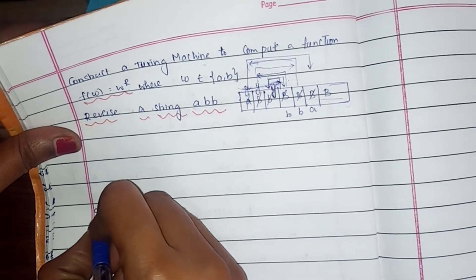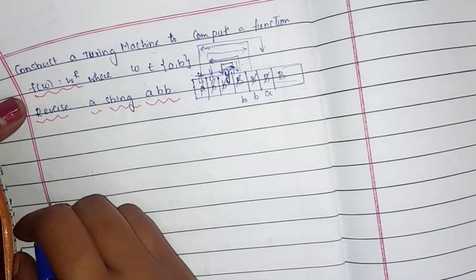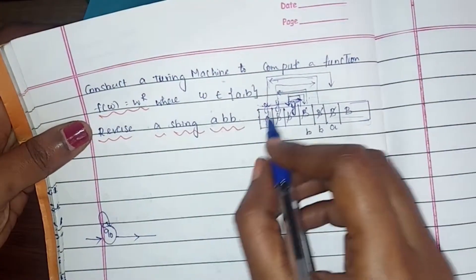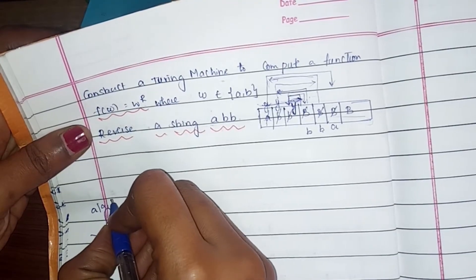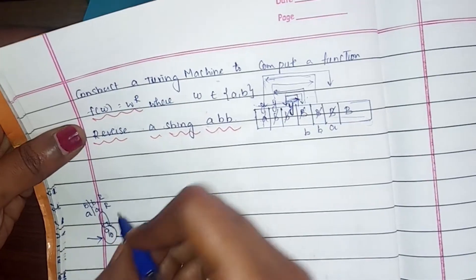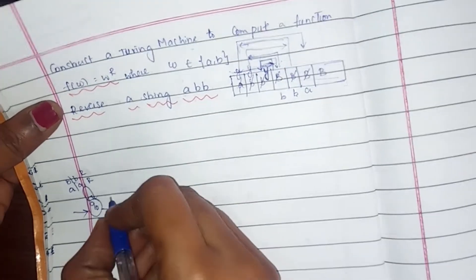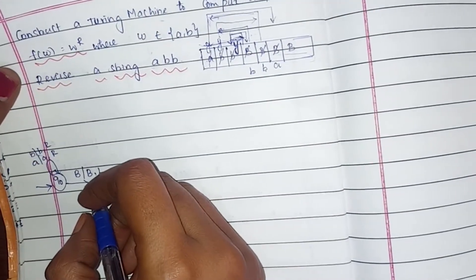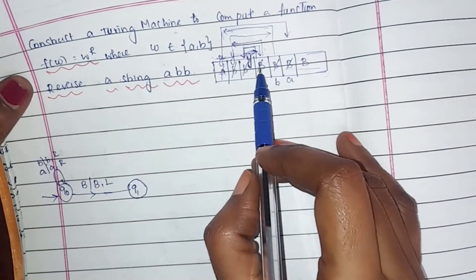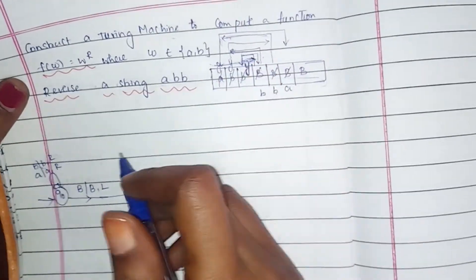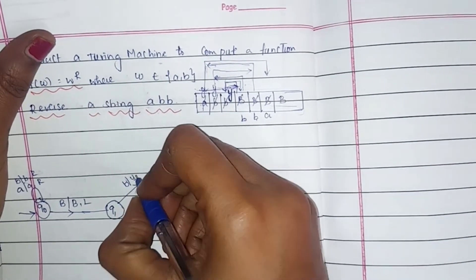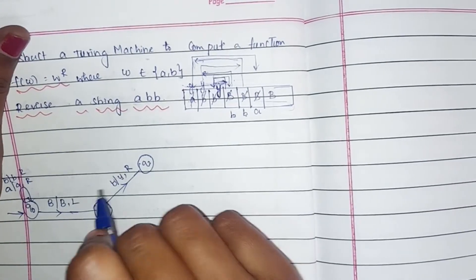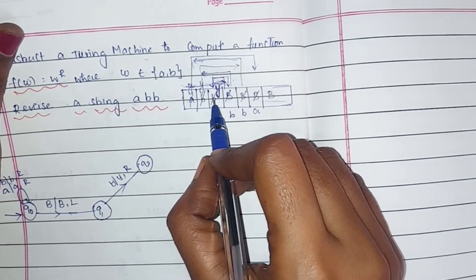The transition diagram starts with q0. In state q0, whatever 'a' or 'b' comes, you go rightwards. When you see a blank symbol, you go leftwards — making the state q1. When you see the blank and move left with 'y' written, you go in the right direction, making state q2.